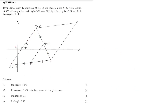Question 3.3: The length of MN. By the midpoint theorem, MN is half the length of QP. Since QP = 7√2, the length of MN is 7√2 divided by 2, which gives approximately 4.95 units.